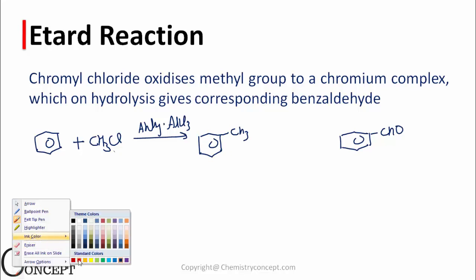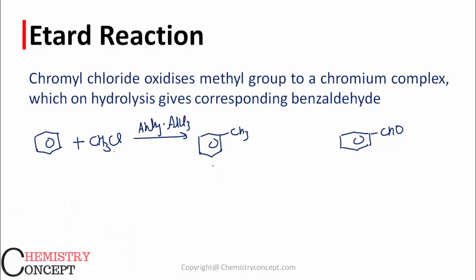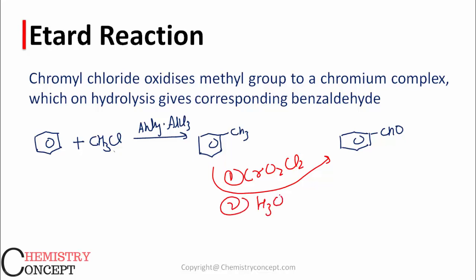Then this toluene compound undergoes the Étard reaction — that is, treatment with CrO₂Cl₂ followed by hydrolysis — to give benzaldehyde. This is the usefulness of this particular reaction. I hope this was clear. For more videos on organic, inorganic, and physical chemistry, stay tuned and don't forget to subscribe. Thank you.